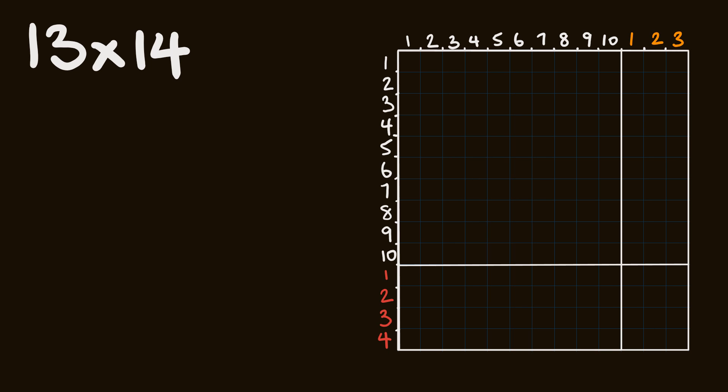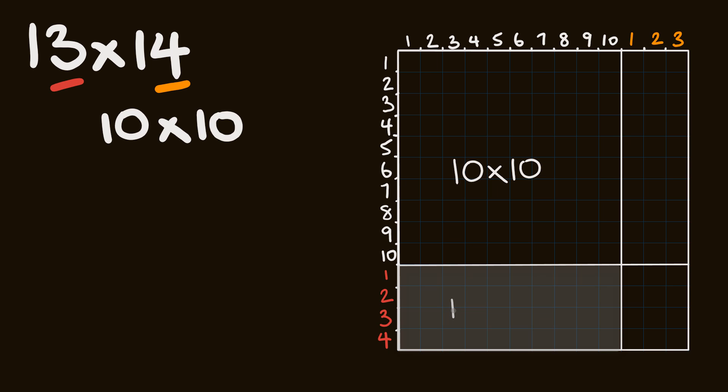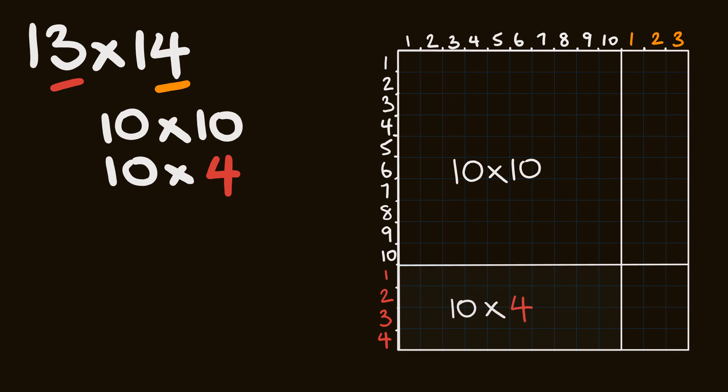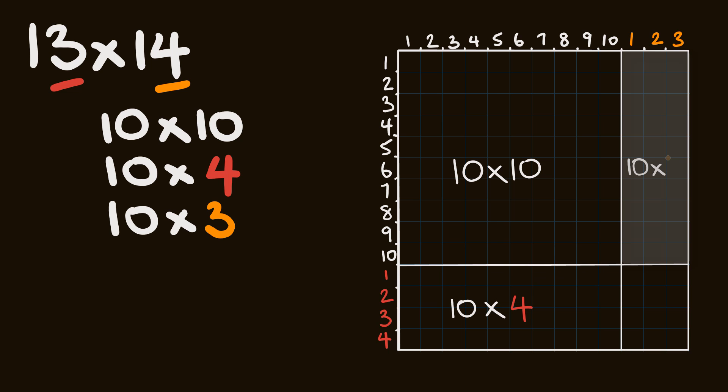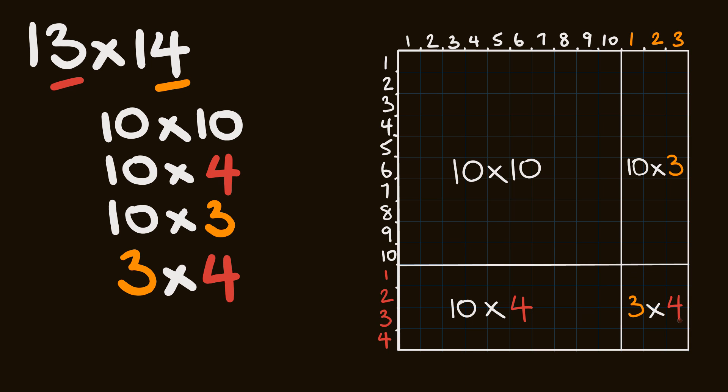So I'll draw this out to show you what's happening. So first off we had 13 by 14. So along the top axis here we have 13, and we're multiplying this by 14. If we grid this out into squares, as we've done here, in the top left hand corner we have 10 times 10. In the bottom left hand corner we have 10 times 4.